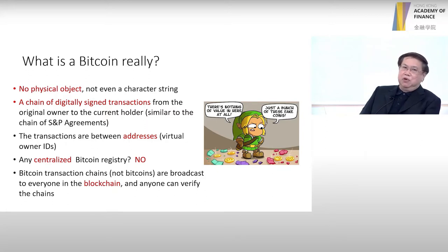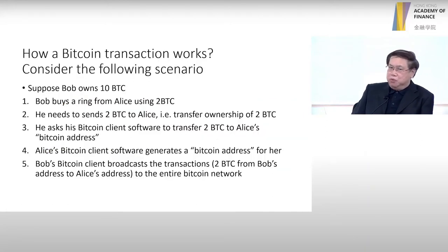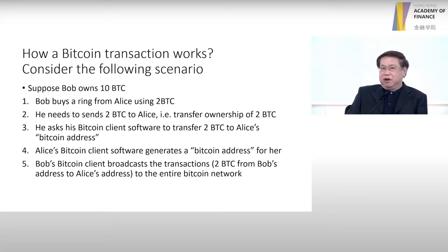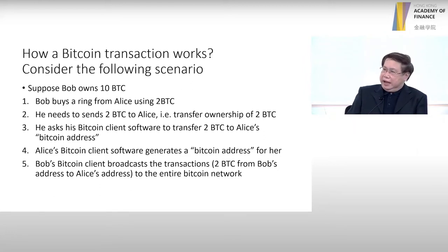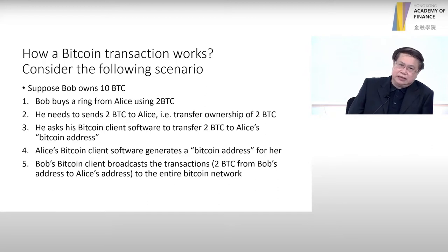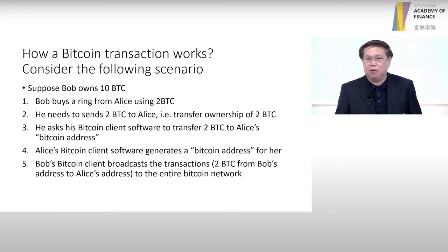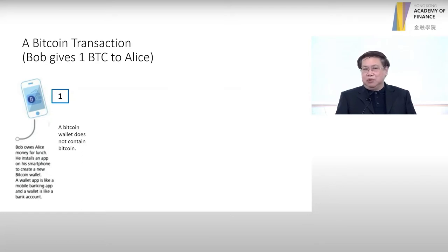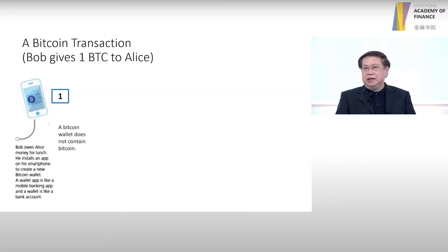Let me give you an example of how a transaction works and what cryptographic techniques are involved. Let's say Bob buys a ring from Alice with two Bitcoin. So how does Bob actually pay or commit this transaction? First of all, Bob opens up his wallet. The wallet actually does not contain any Bitcoin — it only contains the private key. So what Bob will do is ask Alice for a receiving address, which we call the Bitcoin receiving address.